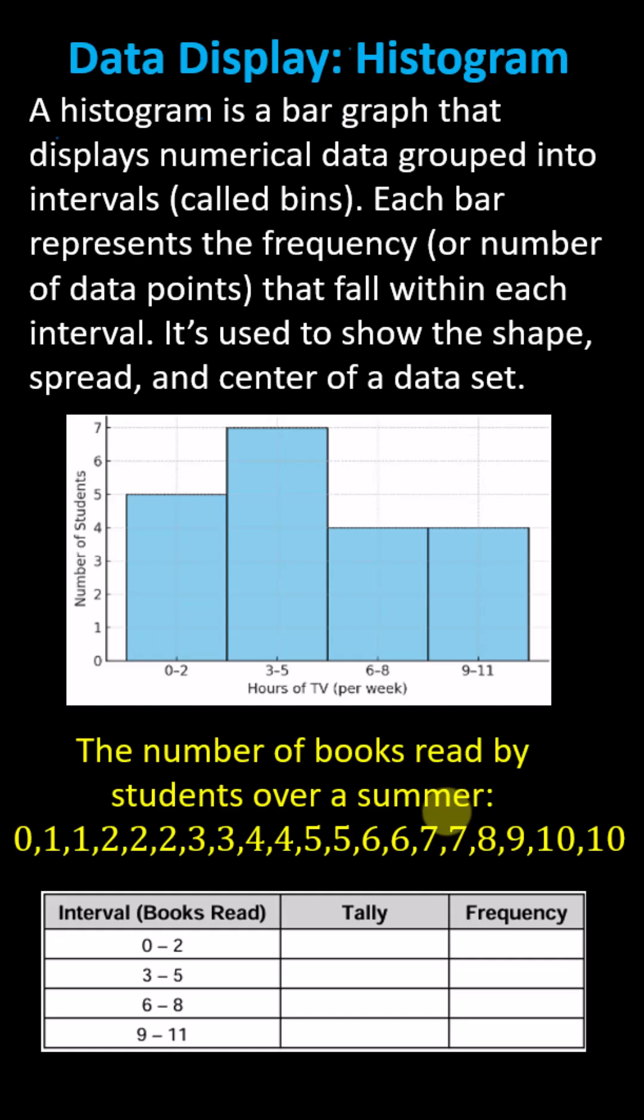The first step is to determine the bins or interval width. All the widths must be the same. Here we have four bins: 0 to 2, 3 to 5, 6 to 8, 9 to 11. Also notice there's no gap in the intervals.